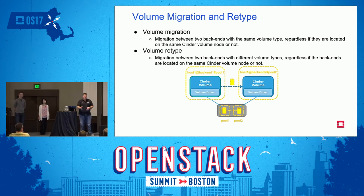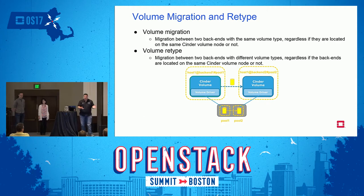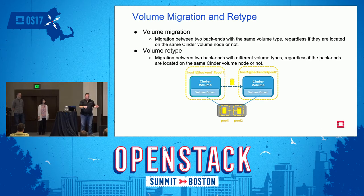When you do an instance migration, we handle disconnecting and reconnecting, but your storage stays in the same location. Volume migration is taking data running on one physical backend and moving it via the Cinder APIs, working with the host backends, to another location. A use case would be bringing a new storage backend into your environment and wanting to rebalance data so certain storage moves to another location.